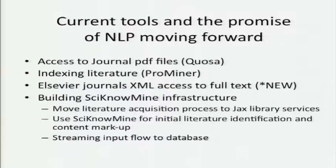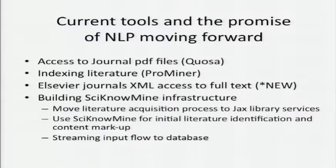Our ideal would be that this entire process was done automatically — that's the ideal, but it will take a while to get there. In the meantime, we've been trying to use some electronic tools to help. We use Quosa for access to journal PDF files, and ProMiner to help us in indexing the literature with the appropriate genes. We've just recently gotten Elsevier journals XML access, and we've been working with Gully to build the Sinomine infrastructure, which we hope will go a long ways towards this automatic process. We would like to ultimately move all of this literature acquisition to be automatic and managed by the JAX library services if possible.